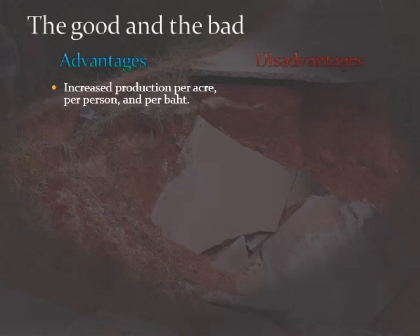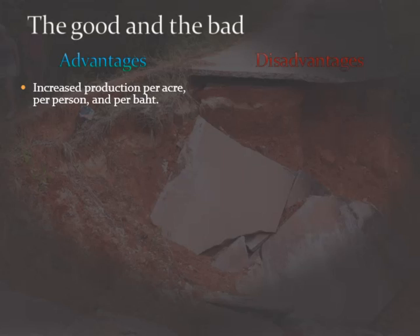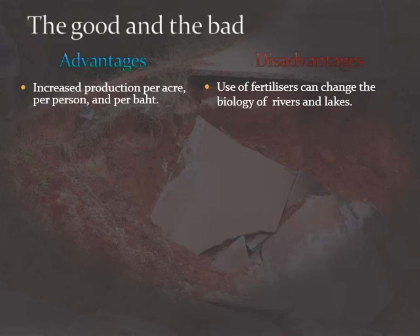On the good side, we get increased production per land area, per person, and per unit of money invested. However, if we use lots of chemical fertilizers and pesticides, we can change the biological and chemical nature of nearby water sources.